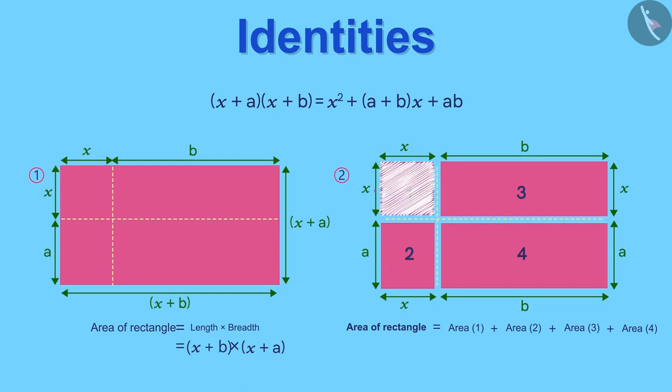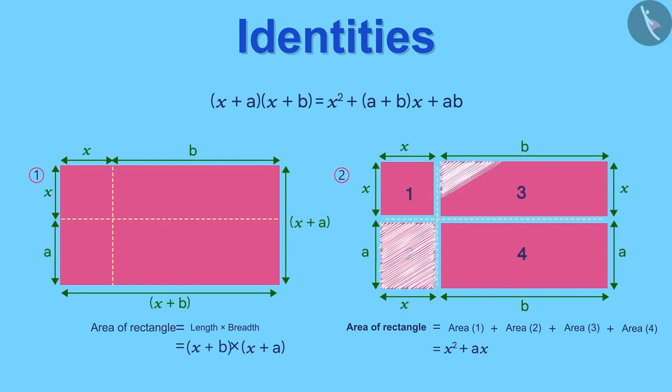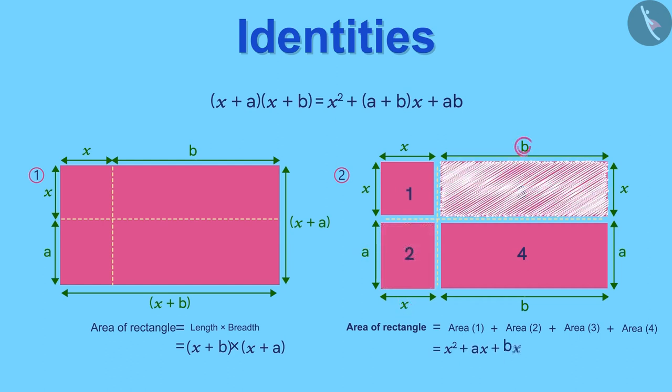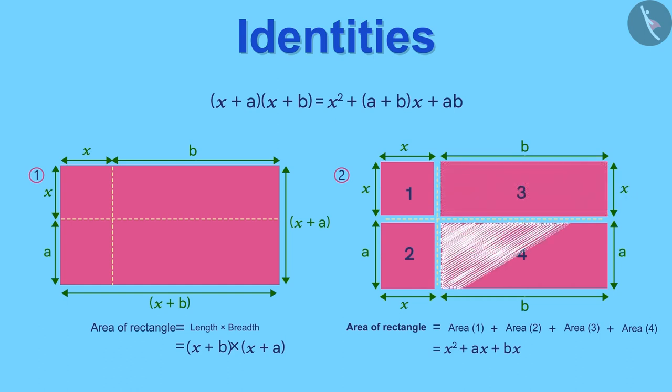Area of the first part is equal to x times x which is equal to x square. Similarly, area of the second part will be a times x, area of the third part will be b times x, and area of the fourth part will be a times b.